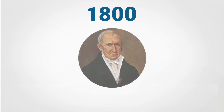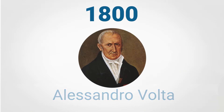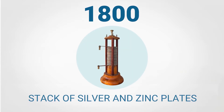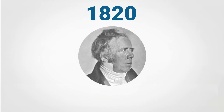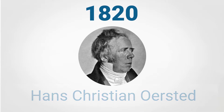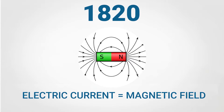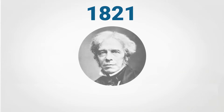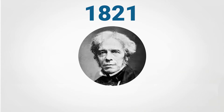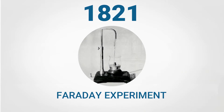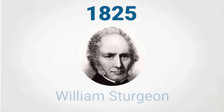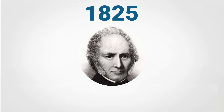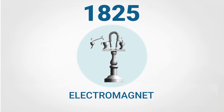In 1800, Italian Alessandro Volta produces, for the first time, a continuous electrical power from a stack of silver and zinc plates. In 1820, Hans Christian Ørsted noticed that electric current is able to create magnetic fields. In 1821, Michael Faraday, with his famous experiment, shows that continuous electromagnetic rotation results from suspending a magnetic wire in an electric field. In 1825, William Sturgeon invents the electromagnet, a coil of wires with an iron core to enhance the magnetic field.